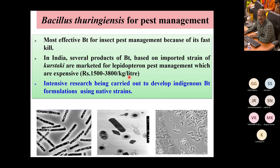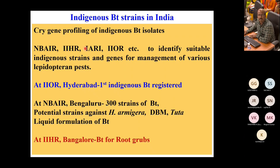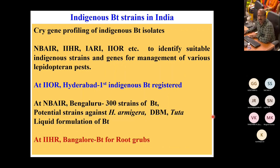In our institute, we have more than 300 strains with potential against management of Helicoverpa armigera, Diamondback moth in cabbage, and Tuta absoluta in tomato. A liquid formulation of BT was also standardized in our institute. IHR is working on root grubs. Different cry genes have been reported. The NBR formulation is a liquid-based formulation — BTG4 strain — very effective for PGNP pod borer, Diamondback moth (Plutella xylostella), and Tuta absoluta.